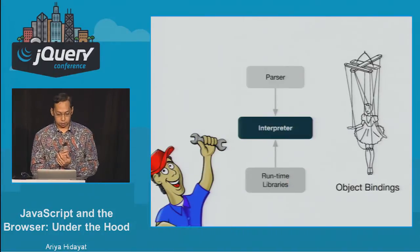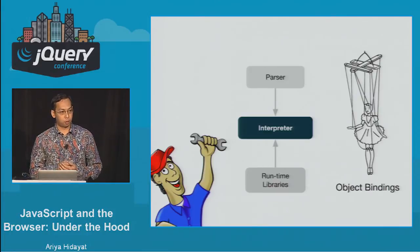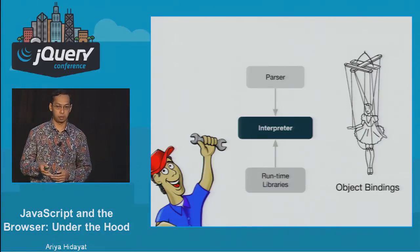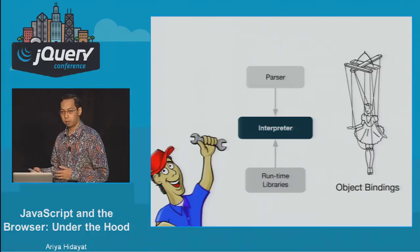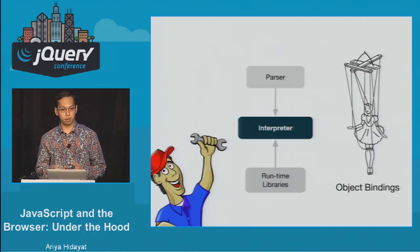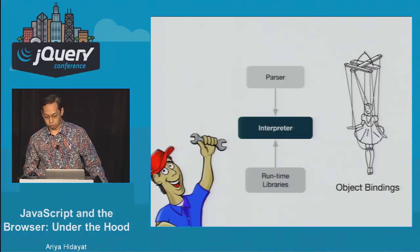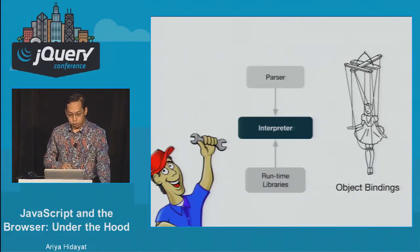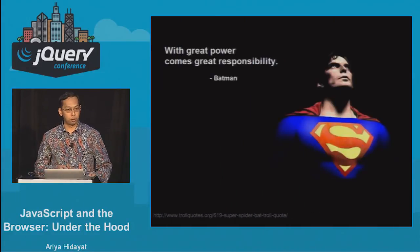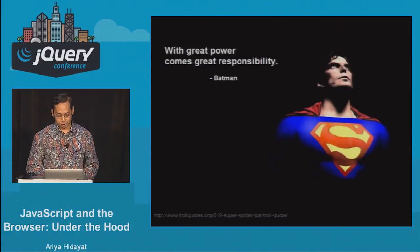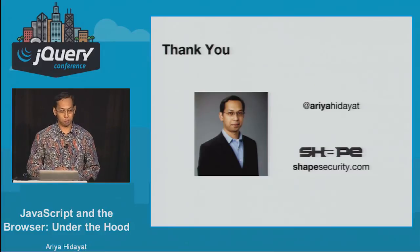So we went a little under the hood and explained how JavaScript code gets executed. There's a parser component, it gets passed to the interpreter to execute it, and there are additional libraries. Object bindings allow the browser to inject additional proxy objects into your JavaScript world so you can manipulate things outside of it. Hopefully this is useful information for you. Thank you very much.